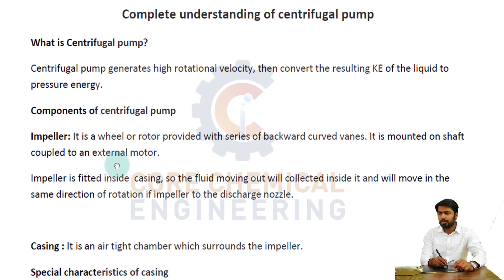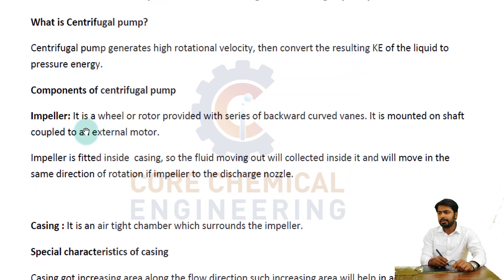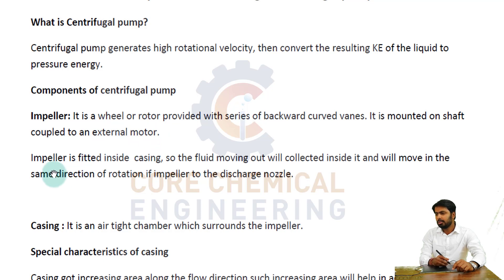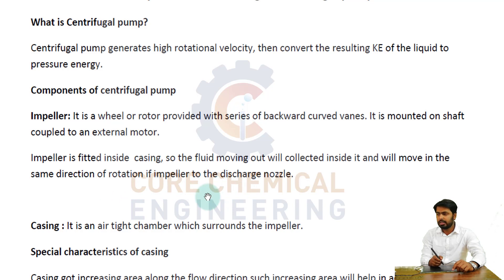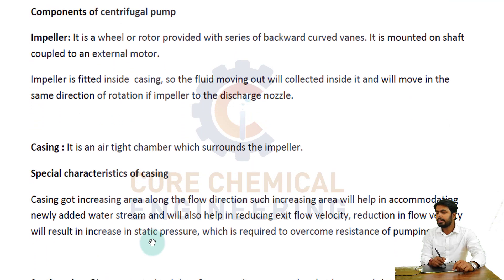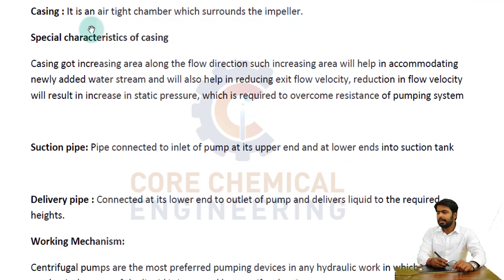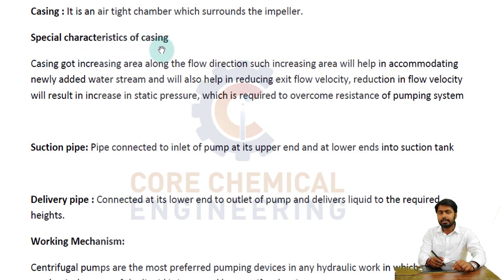Now the components of a centrifugal pump. First is the impeller. What is an impeller? It is a wheel or rotor provided with a series of backward curved vanes, mounted on a shaft coupled to an external motor. The impeller is fitted inside the casing, so the fluid moving out will be collected inside it and will move in the same direction of rotation of the impeller to the discharge nozzle.